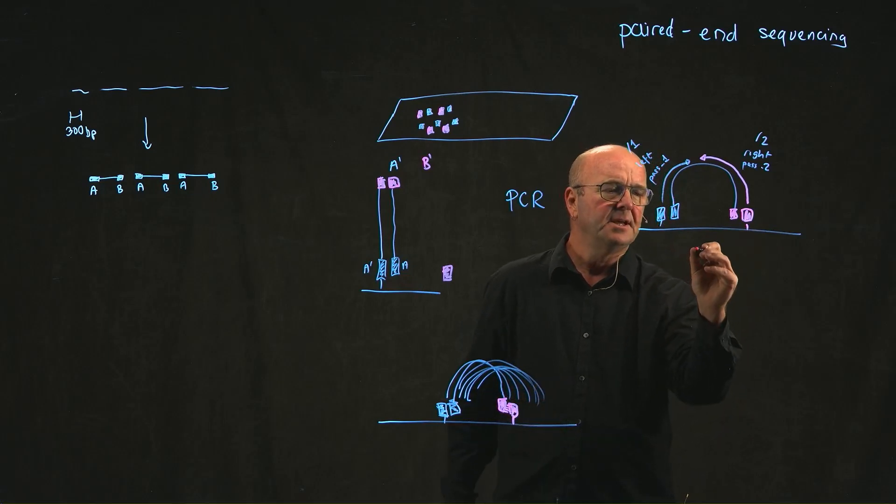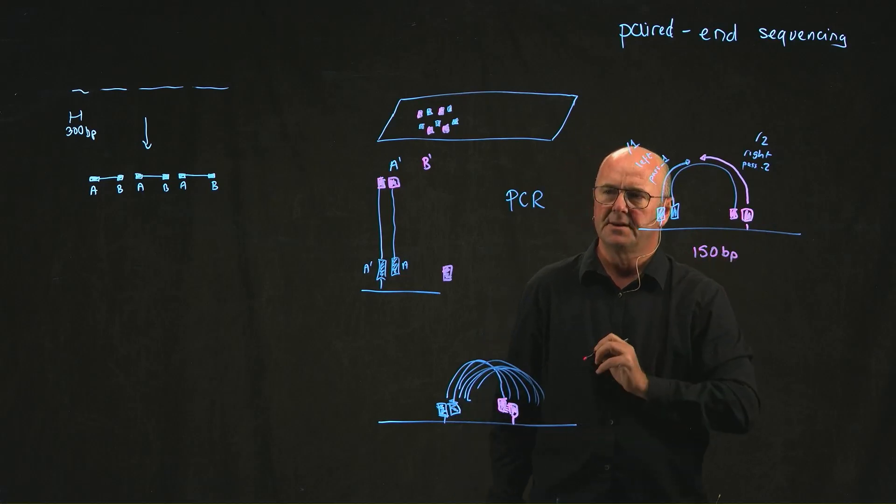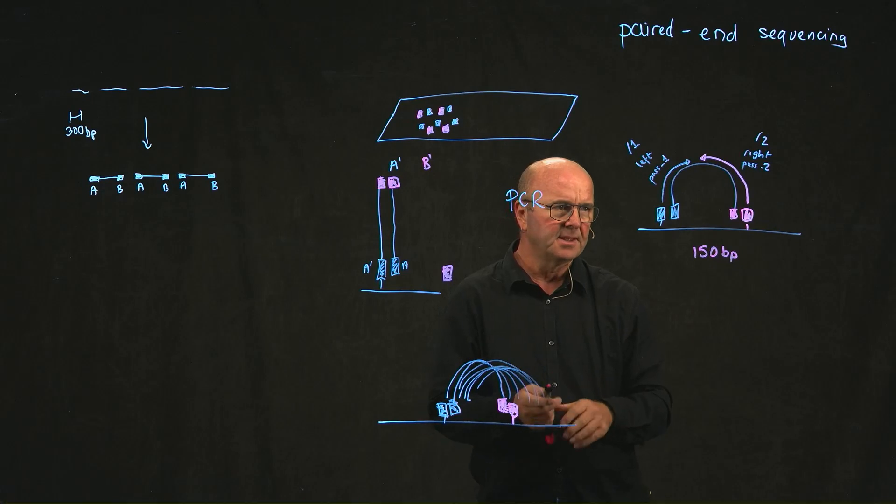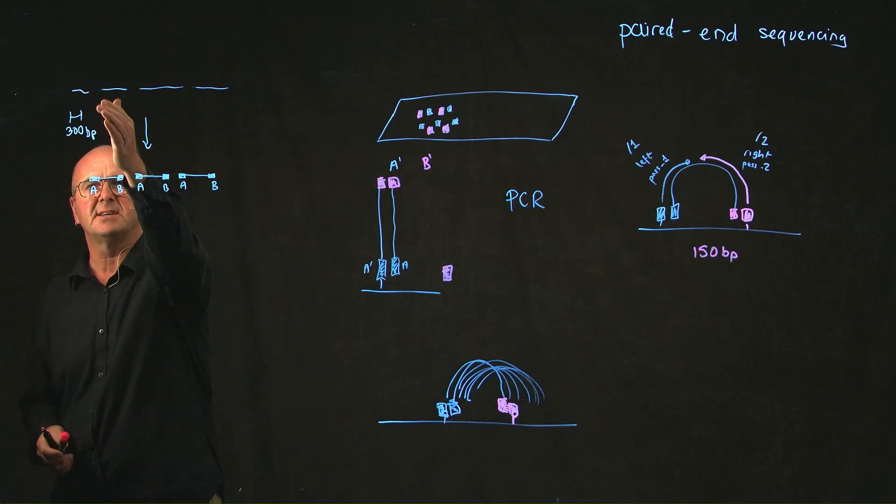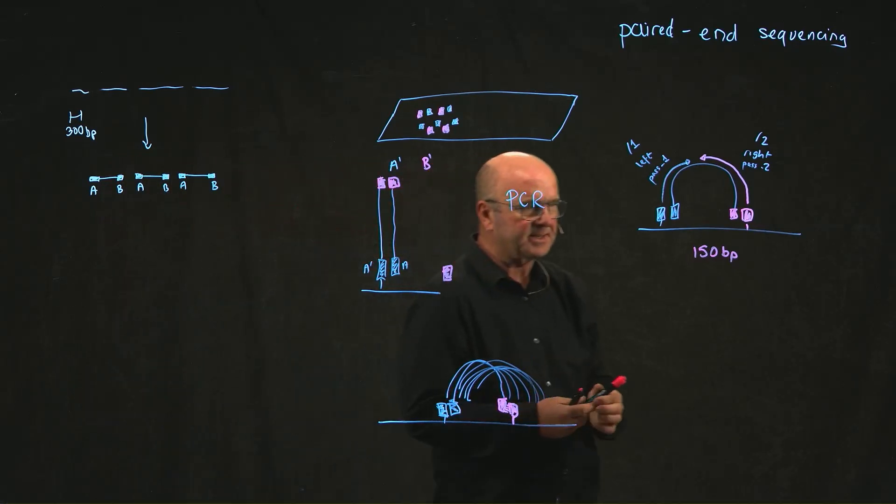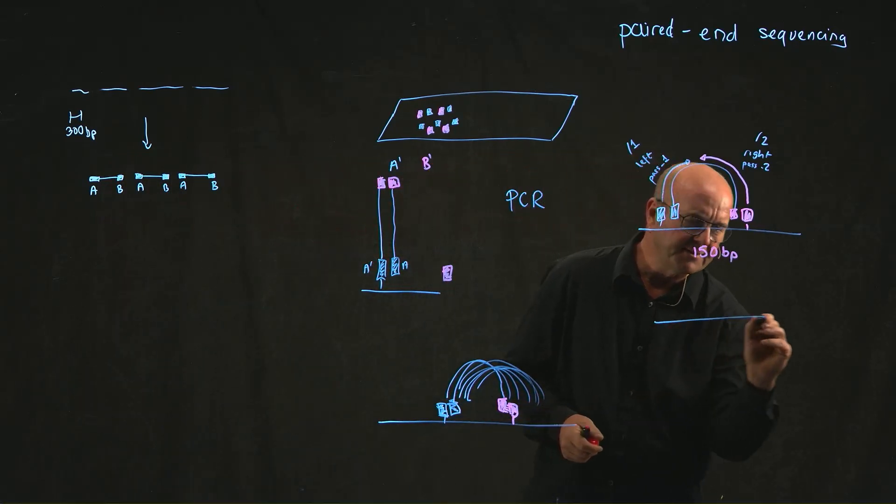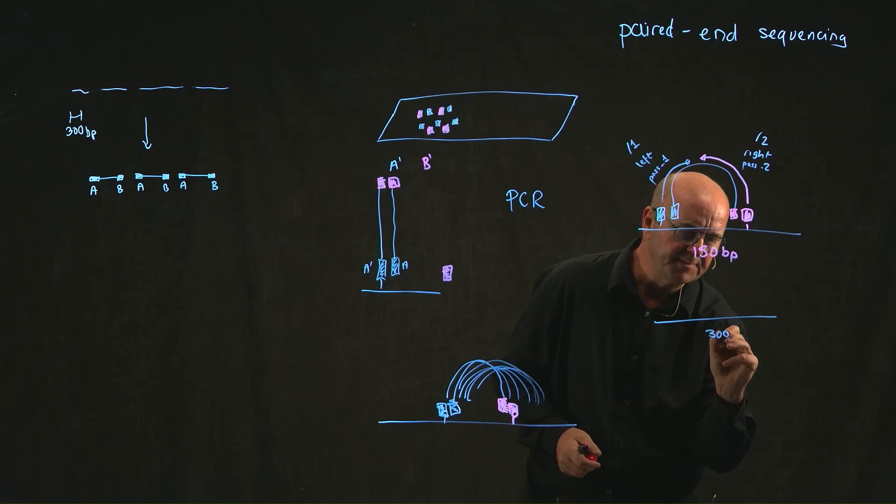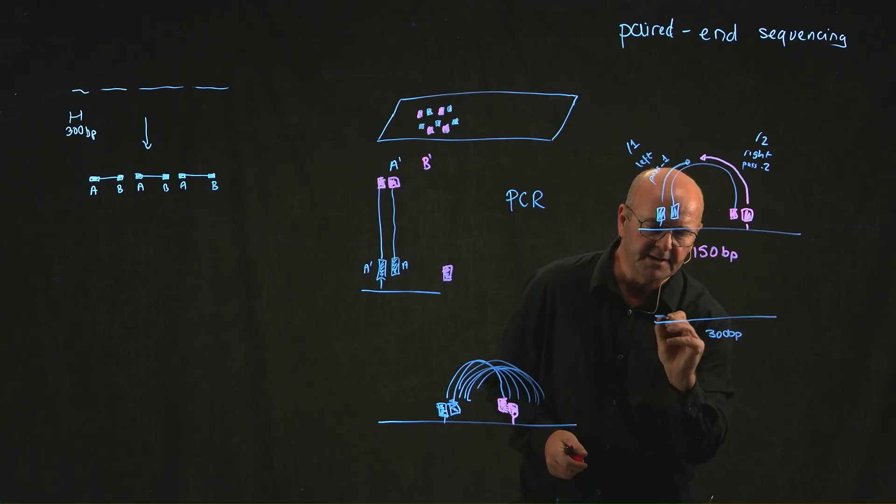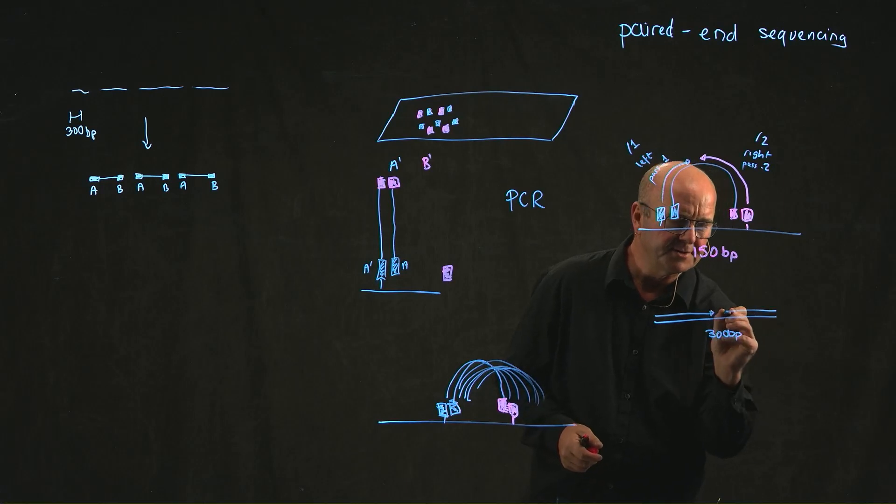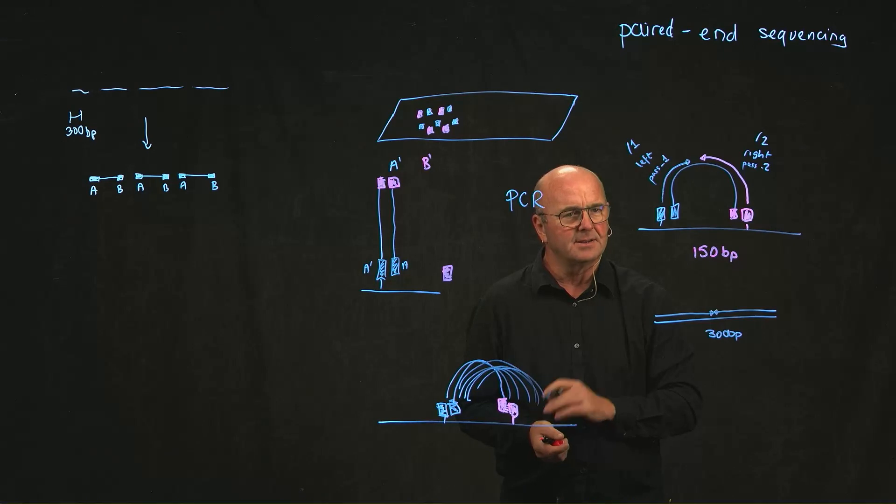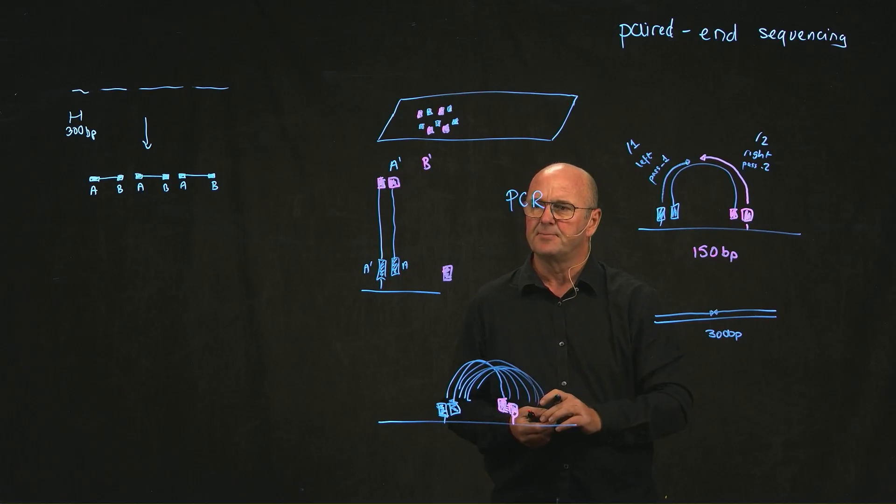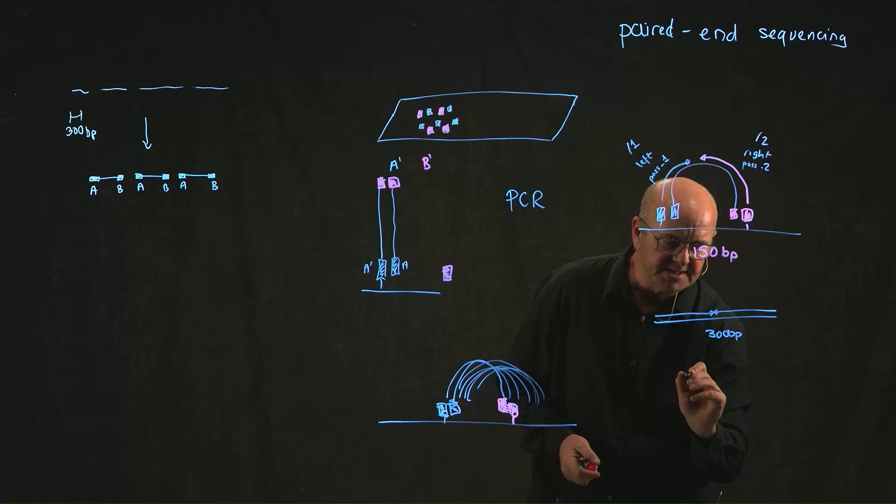Now Illumina sequencing, depending on how you do it, you can change the read length. But very typical will be to have 150 base pair read length from each end. So if our fragment that we start with, if our fragment sizes average 300 bases, then if we have a 300 base pair fragment and we read 150 bases from this end and 150 bases from this end, we basically won't get any overlap whatsoever.